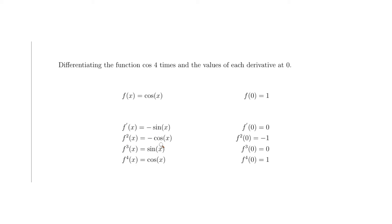For the third derivative, we differentiate minus cosine x. The derivative of minus cosine is plus sine, so the third derivative is sine x. The value of sine at zero is zero, so the third derivative at zero is zero.